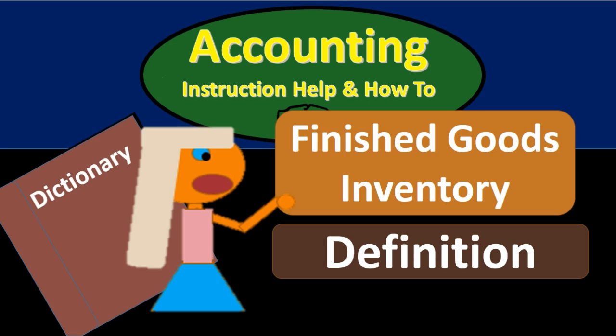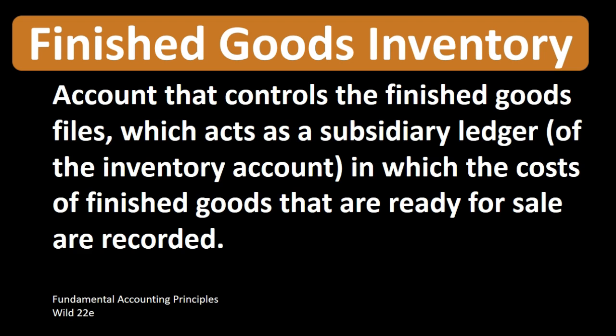Hello, in this lecture we will define finished goods inventory. According to Fundamental Accounting Principles Wild 22nd Edition, finished goods inventory is an account that controls the finished goods files, which acts as a subsidiary ledger of the inventory account in which costs of finished goods that are ready for sale are recorded.